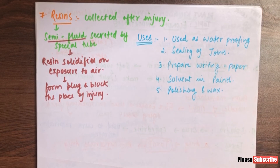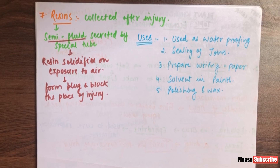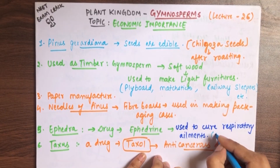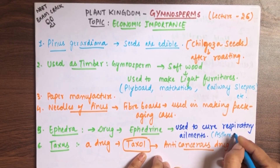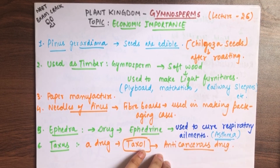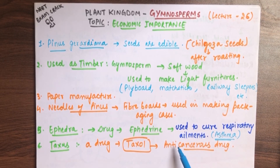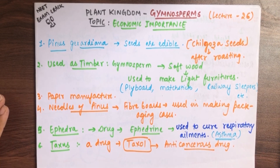So those are all the economic importances of gymnosperms. We have seen that some seeds are edible — like Chilgoza seeds from Pinus gerardiana. They are used to make paper and fiber boards as timber. Some drugs are made, like ephedrine from Ephedra, which is used to treat respiratory ailments like asthma, and taxol from Taxus, which is an anti-cancerous drug used to treat various cancers. And we have seen resin and its many uses.